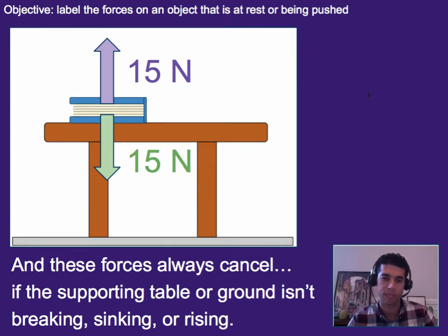So for example if the table is breaking, the table is not able to fully support the weight. If the table is sinking then the book is accelerating downwards a little bit so the weight is bigger than its normal force. And if the table is somehow rising, so imagine like an elevator or something like that, then the force from the table is actually bigger than weight and that's why it would be accelerating upwards.